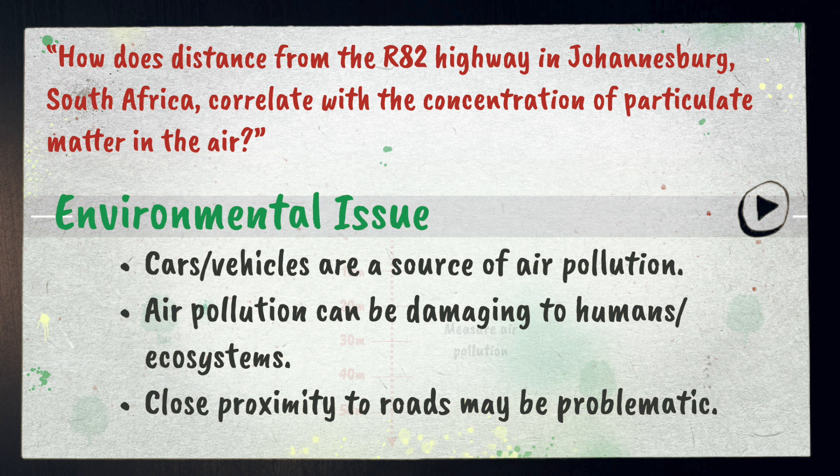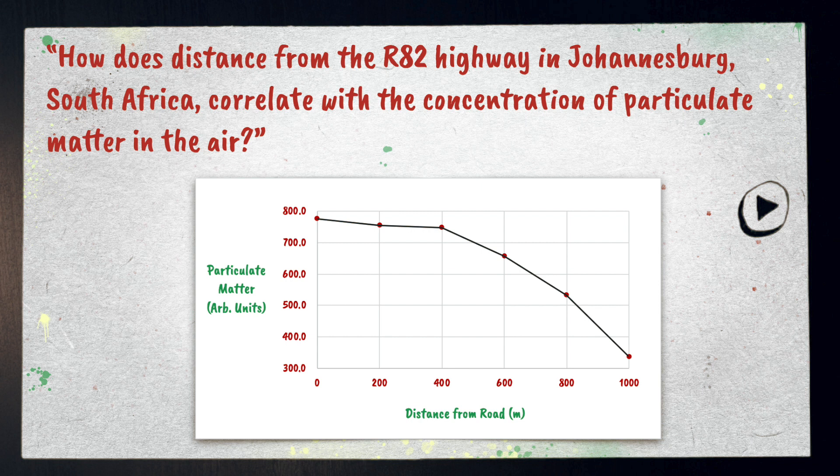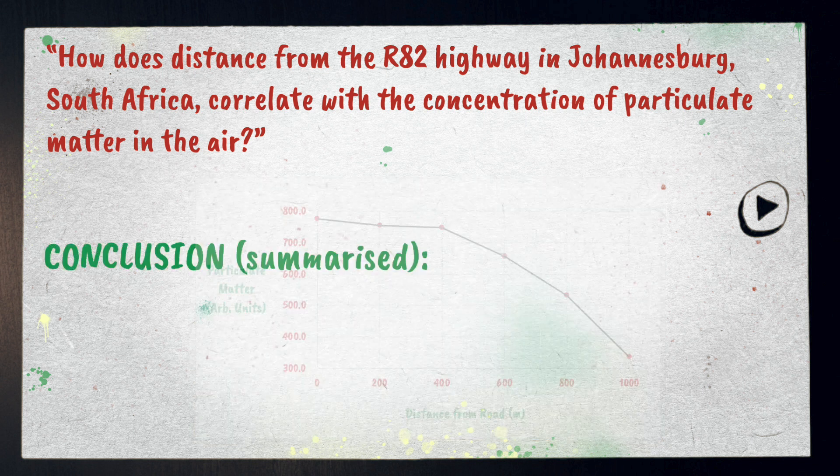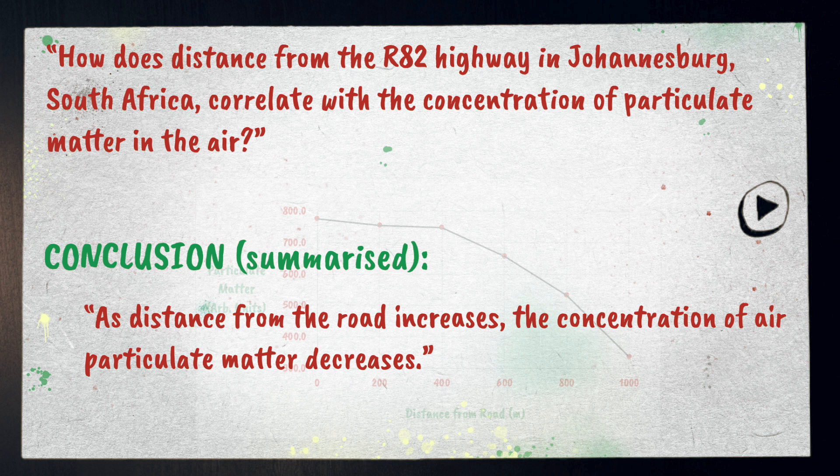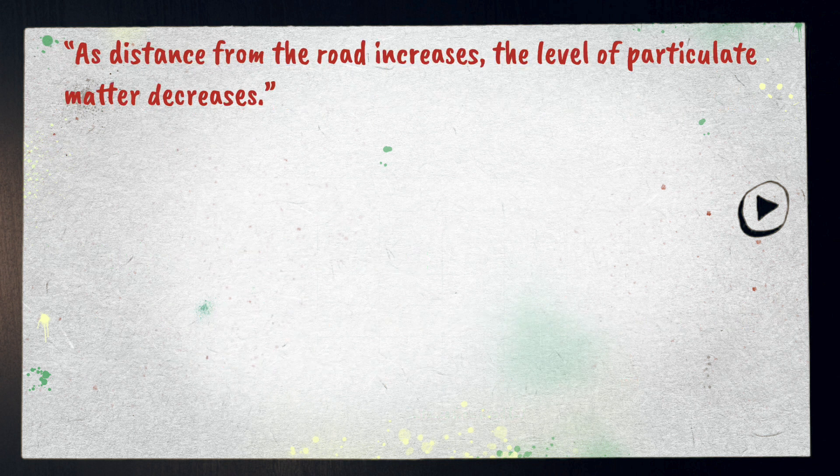Let's say we get these results showing a good correlation with air particulate matter concentration decreasing as we move up to a kilometer away from the road. A simple conclusion we might come to is: as distance from the road increases, the concentration of air particulate matter decreases. We're going to have a go at evaluating that conclusion.